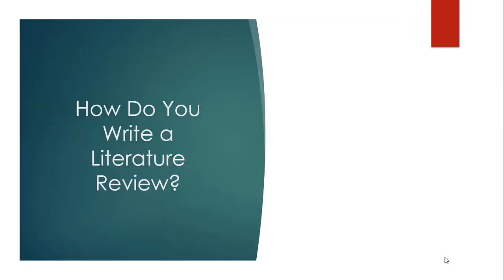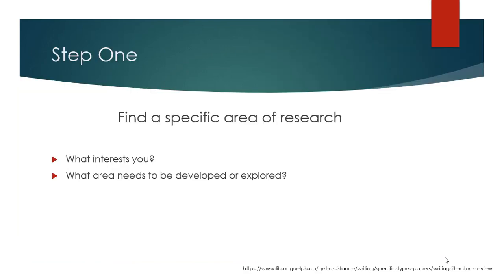Now let's talk about how you actually write a literature review. We've broken it up into steps to make it easier to follow. These aren't really set in stone — they're just supposed to guide you in the process. Step one is finding a specific area of research.